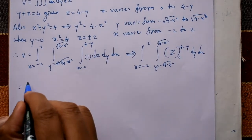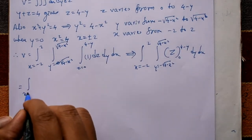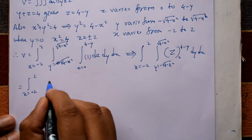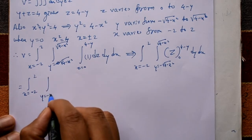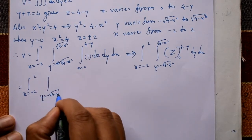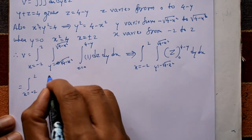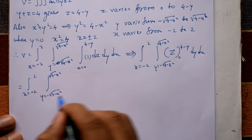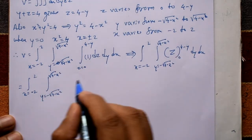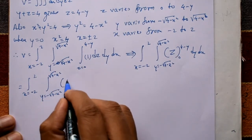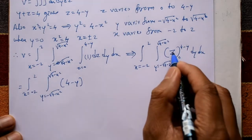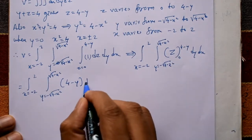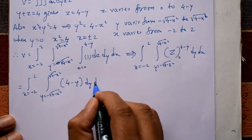Integrating 1 with respect to z gives z evaluated from 0 to 4 minus y. Taking the upper limit 4 minus y minus the lower limit 0 gives 4 minus y, so we integrate (4 minus y) dy dx.